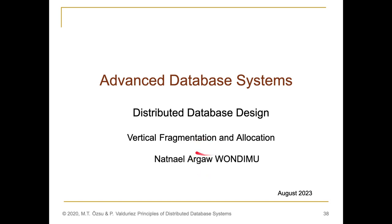Hello class. Today we'll be talking about vertical fragmentation and location, which is part of our previous class on distributed database design. Last time we were talking mainly about horizontal fragmentation, specifically primary horizontal fragmentation and derived horizontal fragmentation. We have seen different correctness measures like completeness, reconstruction and disjointness, and also how to compute for horizontal fragments in both cases. Besides that, we have seen different algorithms, among which common algorithms that use complete and minimal list of predicates, simple predicates and miniterm predicates.